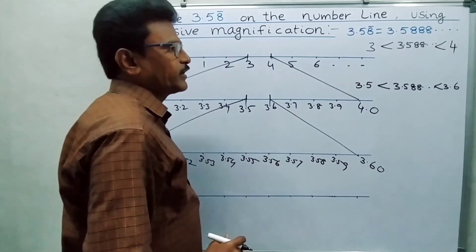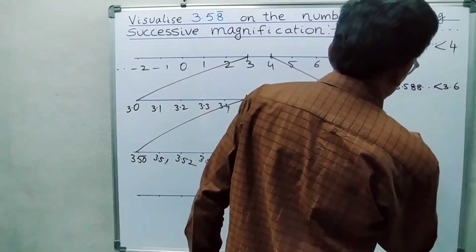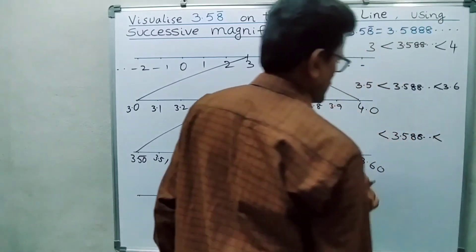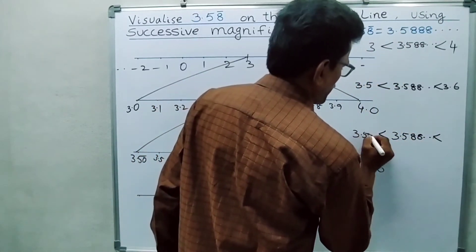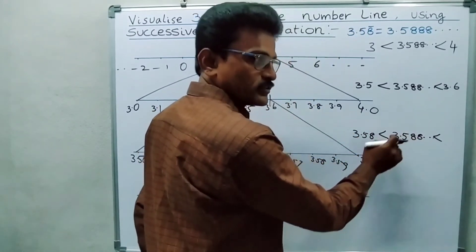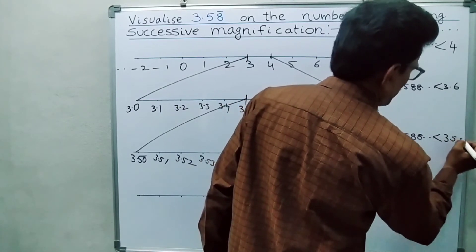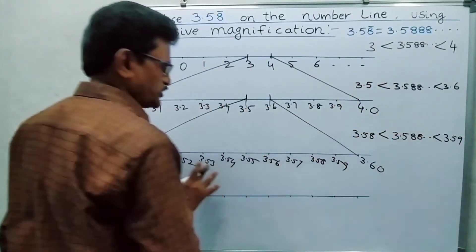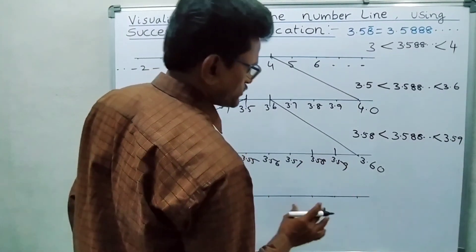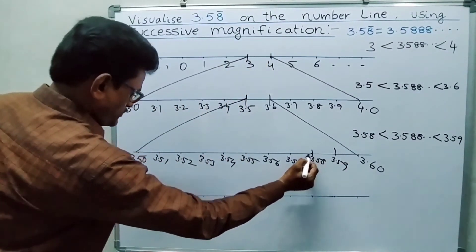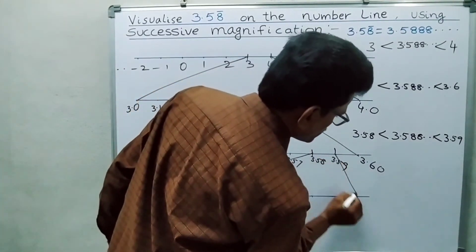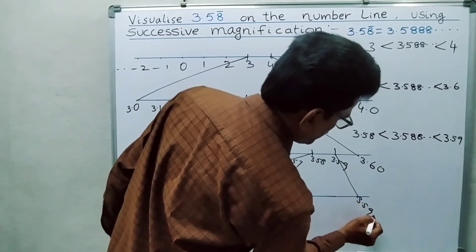Go ahead and identify all numbers here. Once again, 3.588... so on — it is in between 3.58 and 3.59, meaning it is greater than 3.58 but less than 3.59. Identify these two: 3.58 and 3.59 are the numbers on the number line. This one is 3.58 and this one is 3.590.